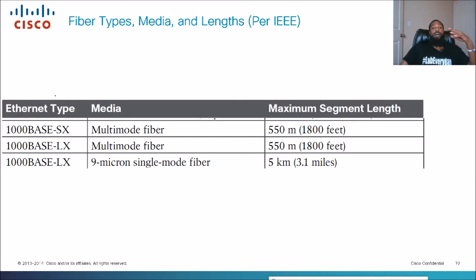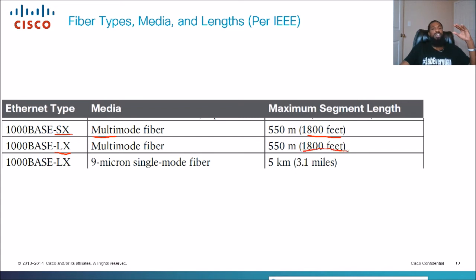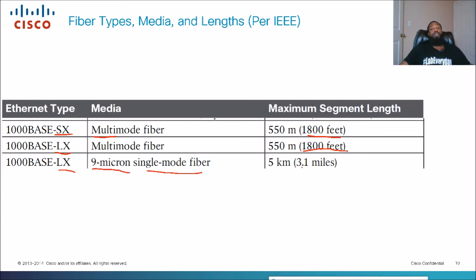Now let's look at specific fiber types and their exact lengths. We've got 1000BaseSX, where SX stands for short range, and LX stands for long range. There is a longer-range multi-mode version traveling at about 1,800 feet. Then there's 1000BaseLX, which is nine-micron single mode fiber and it travels at 3.1 miles — further than multi-mode fiber. I got this chart from the official certification guide.